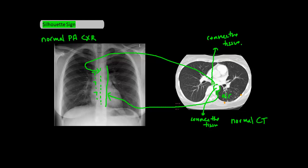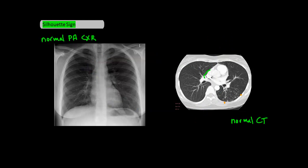Now let's take a look at the left and right heart borders, which are here on the CT. The heart is basically the density of connective tissue, and because of the left and right heart border touching the air found in the lung, we can see nice sharp borders on the frontal chest X-ray.